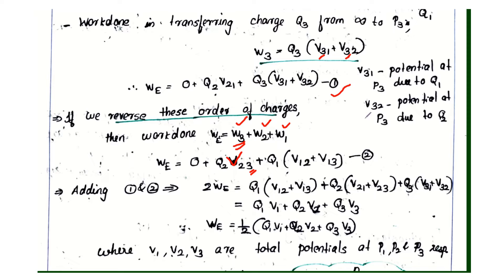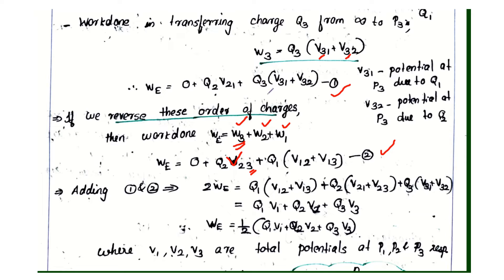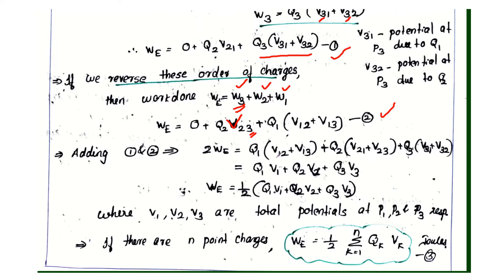Adding equation 1 and equation 2, we get 2WE equals Q1·(V12 plus V13) plus Q2·(V21 plus V23) plus Q3·(V31 plus V32).